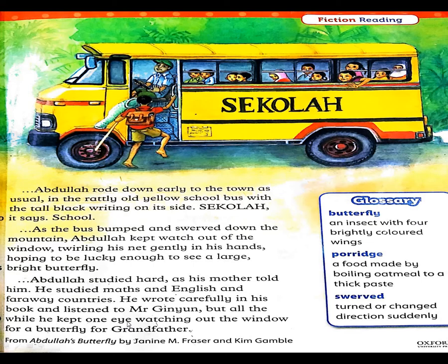Now tell me the answers to a few questions. Why did Abdullah keep his eyes out of the window? Because he wanted to catch the butterflies. Why did he catch the butterflies? To sell them and use the money to buy porridge for his grandfather.